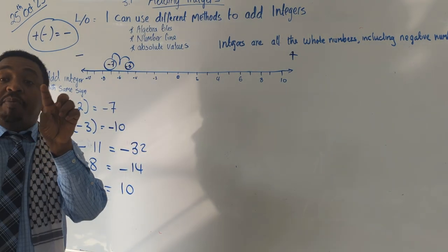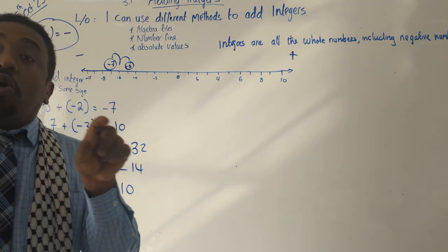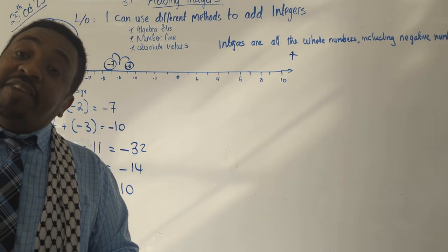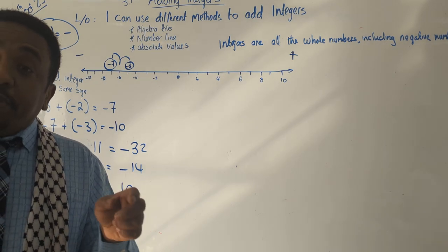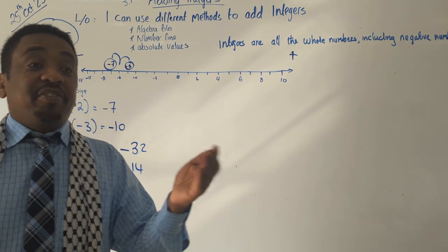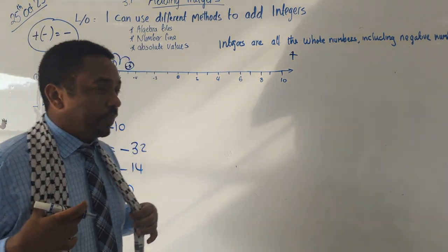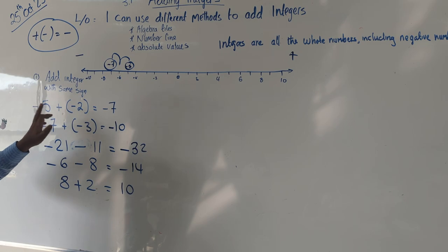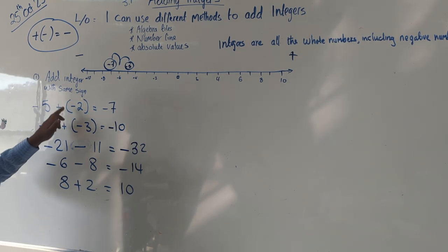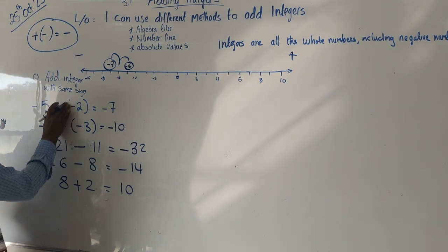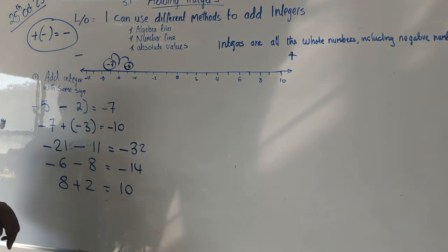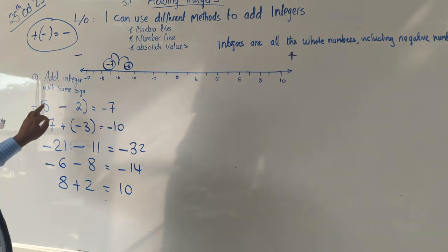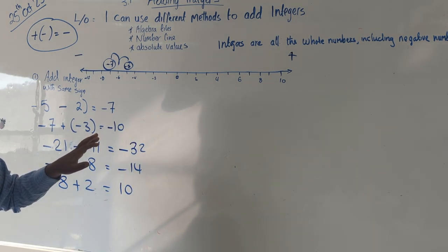You have to understand this: if both of them are minus, you add them and the answer becomes minus. If both of them are plus, you add them and the answer is plus. If you see a plus and minus next to each other or linked by a bracket, they change into minus — because the negative is more powerful. So every time you see plus and minus linked, the minus takes over.